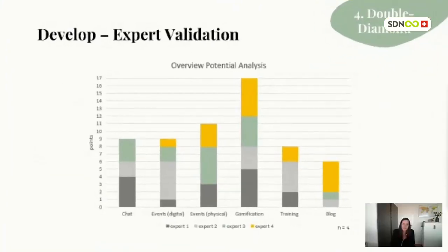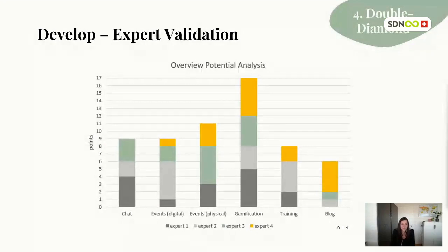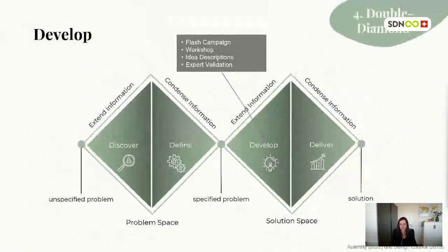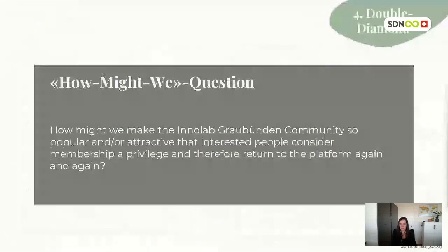To decide which idea should be prototyped, experts in community management, community building, and open innovation assessed the potential of each individual area. As you can see, gamification scored best. According to experts, this offers the advantage of a playful approach to the platform while still ensuring a valid measurement of interaction — that was the reason the experts considered gamification the area with the most potential.